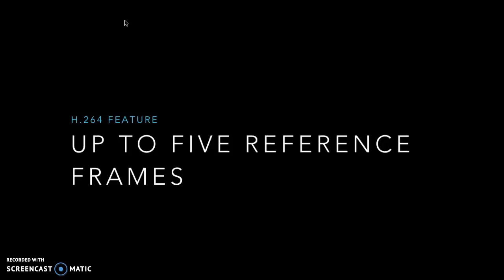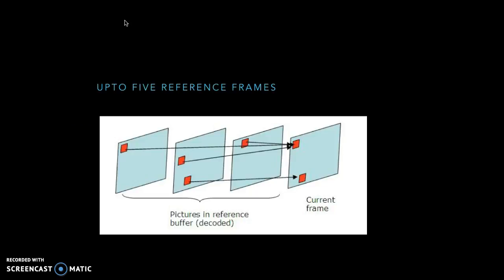H.264 provides the ability to have up to five reference frames. Before H.264, we had the notion of GOP, or Group of Pictures, which is comprised of I-frames, B-frames, and P-frames.